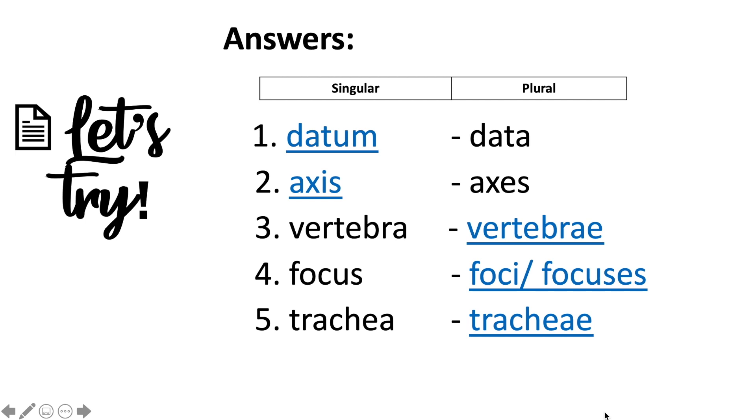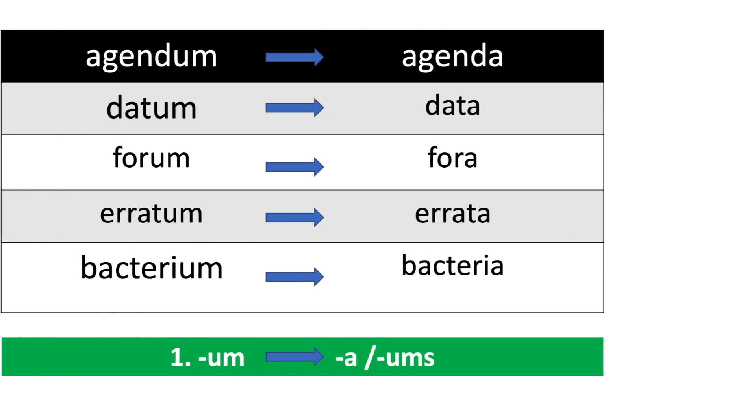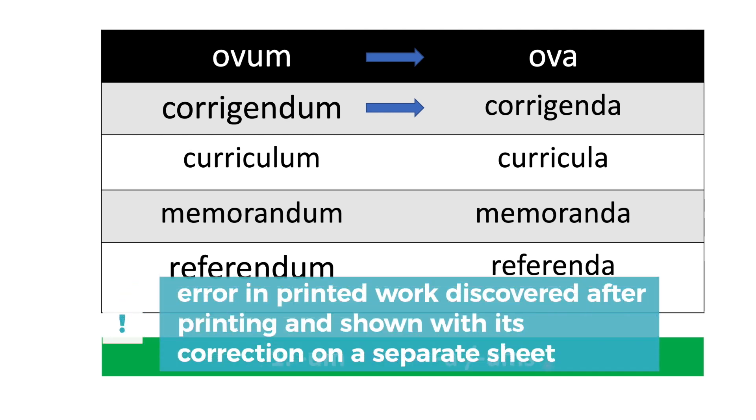Now let's move on to the lesson proper. Category one: these are words that end with um, and so in the plural form the um becomes a or ums. The first word: agendum/agenda, datum/data, forum/fora, erratum/errata. Erratum means error. Bacterium/bacteria, ovum/ova, corrigendum/corrigenda. Corrigendum means error in printed work discovered after printing and shown with its correction on a separate sheet.